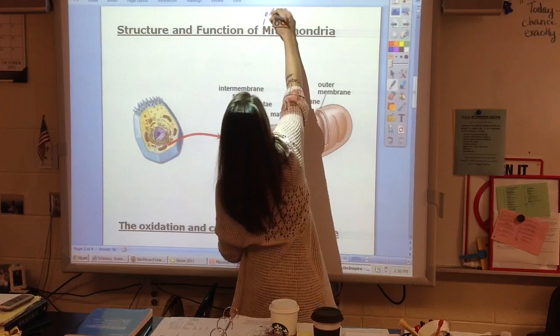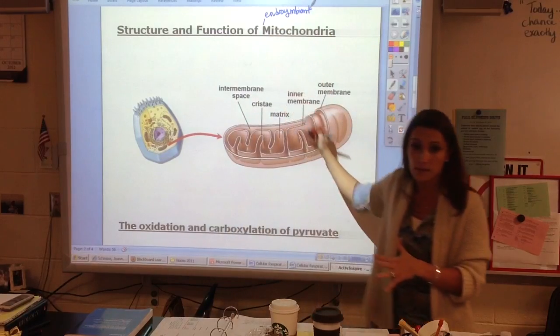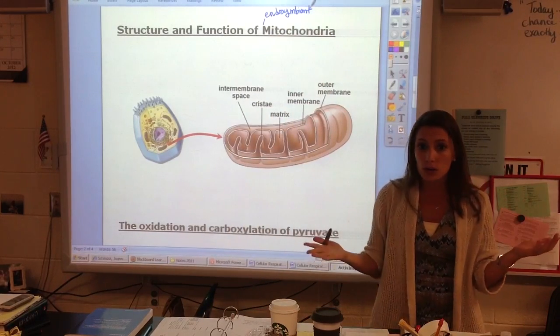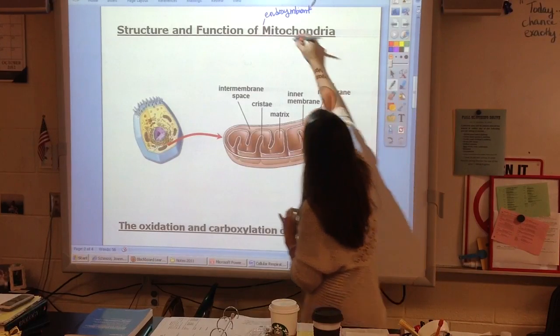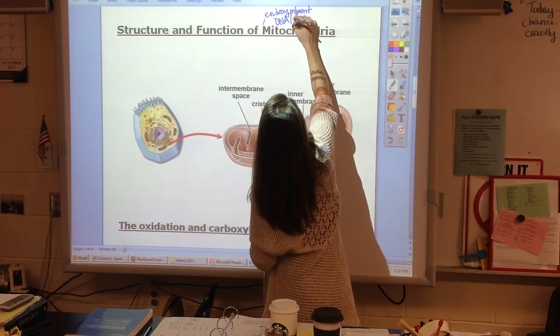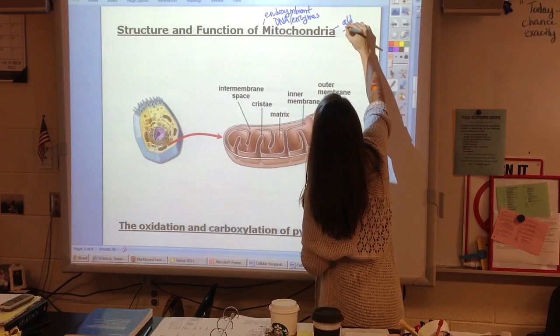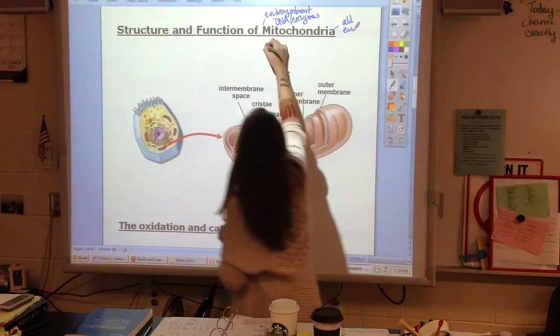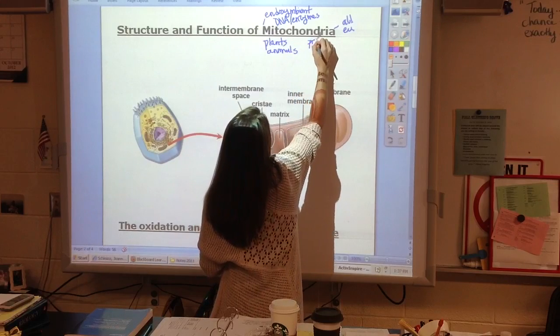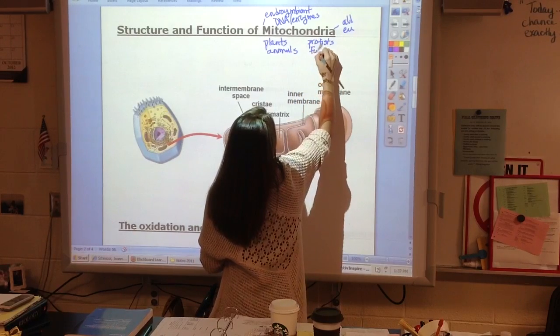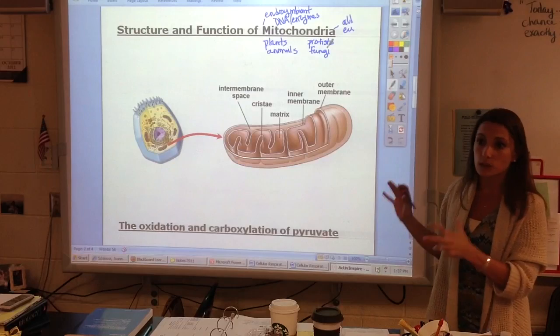We're getting ready to move into the mitochondria. The oxidation of pyruvate will actually move us into the mitochondria. The mitochondria - we want to think a little bit about the endosymbiont theory. We want to keep in mind where the mitochondria came from. The theory that it could have once been its own little free-standing cell, little prokaryotic cell. It does have its own DNA, it does have its own enzymes. This is in all eukaryotic cells. This will be in plants, in animals, in protists, in fungi.